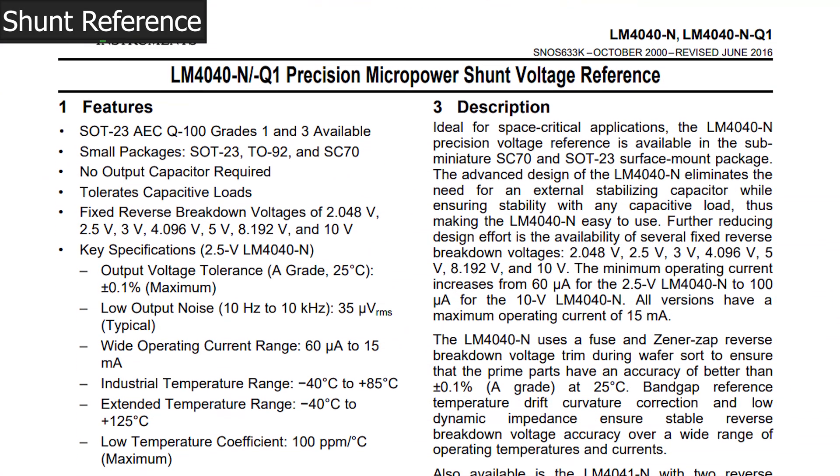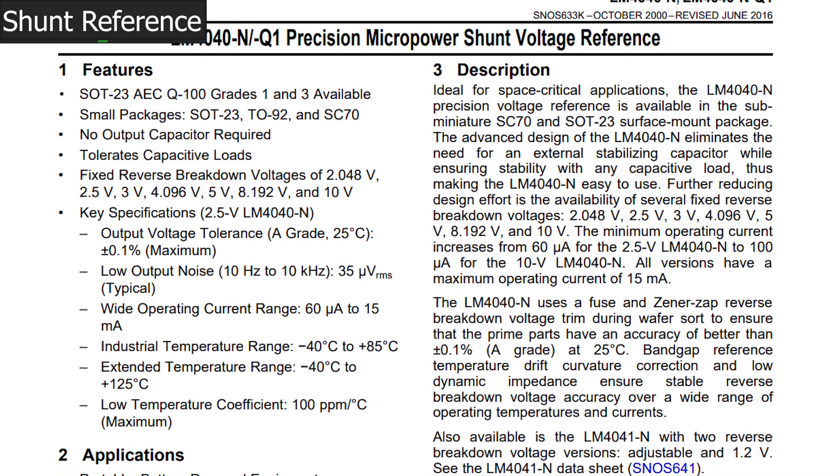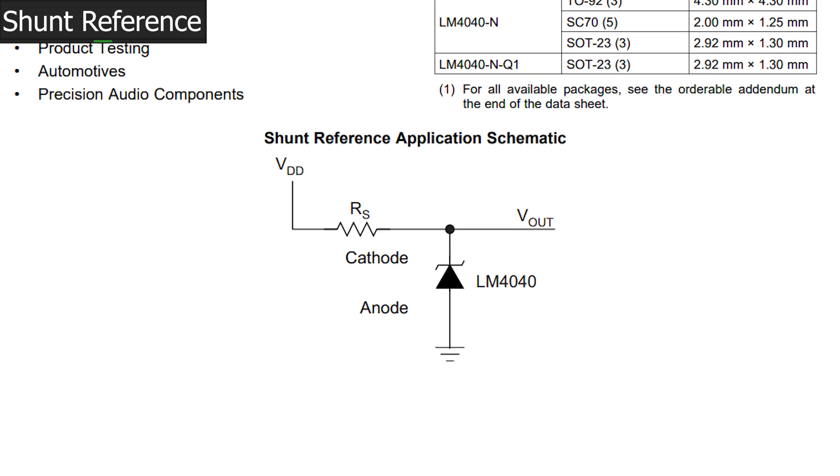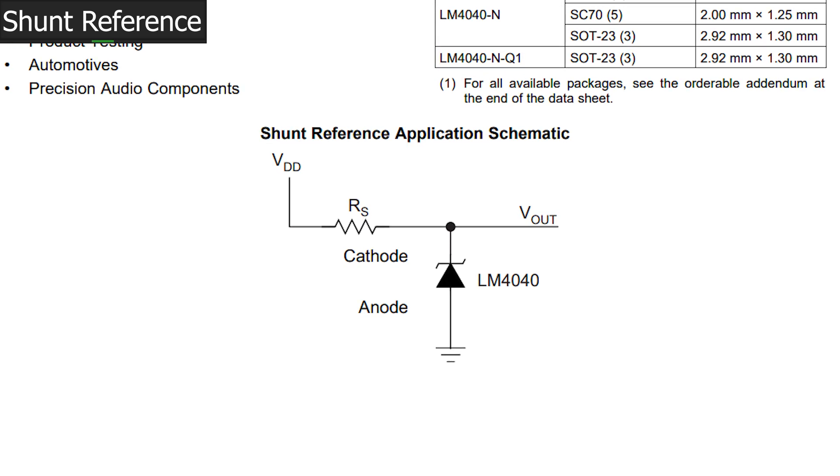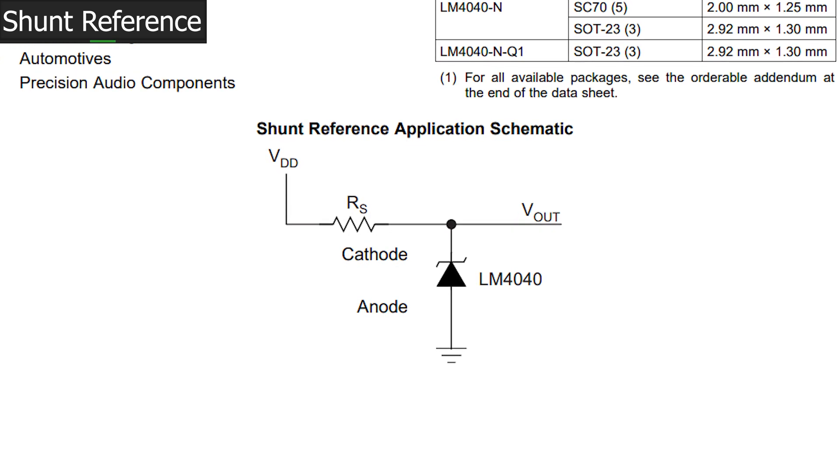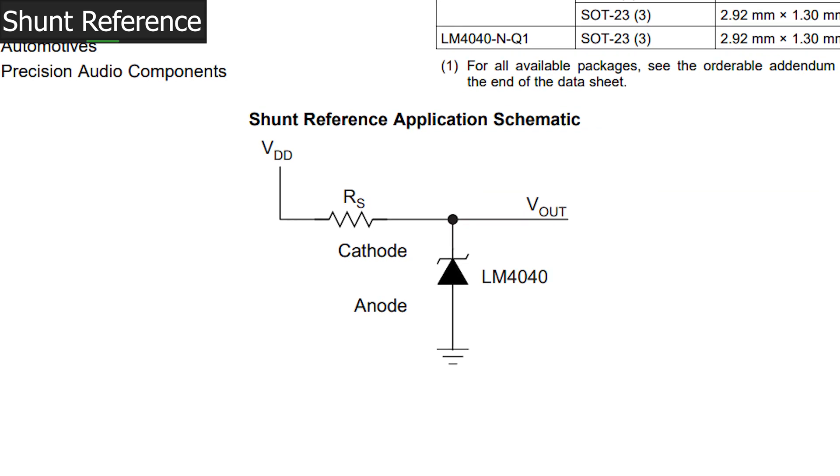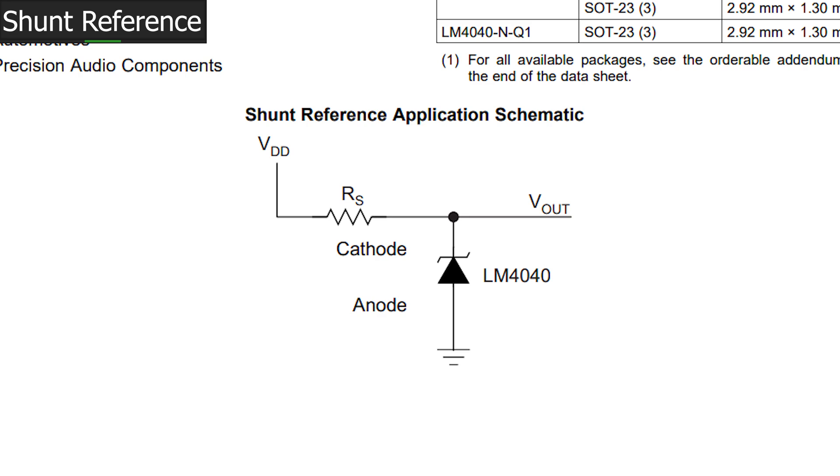A shunt voltage reference is a lot like a zener diode, except for everything about the internals. A shunt voltage reference is temperature compensated and constructed so that changes in current have a minimal impact on the voltage across them.